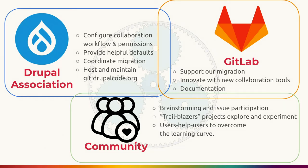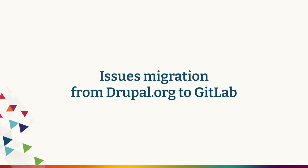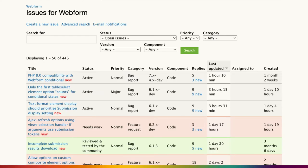This is the outline of what we've been doing for the last year and will be doing for the next six months. There are two major steps: one is issues migration and the other is testing migration. We'll do a quick overview of what will happen with issues, but this presentation is mostly about GitLab CI.